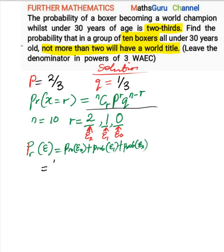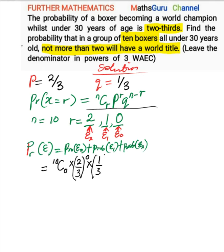For the probability that none of the 10 boxers will have a world title, we have: 10 combination 0, times (2/3) raised to the power of 0, times (1/3) raised to the power of 10 minus 0. Then we add to that: 10 combination 1.